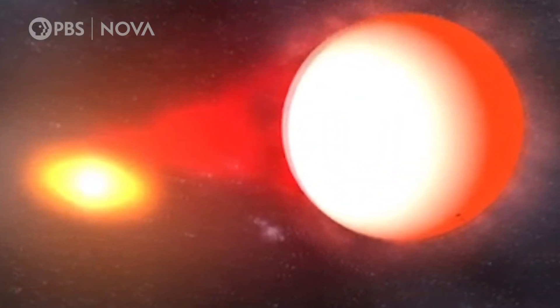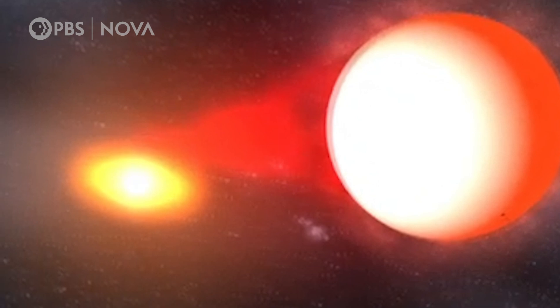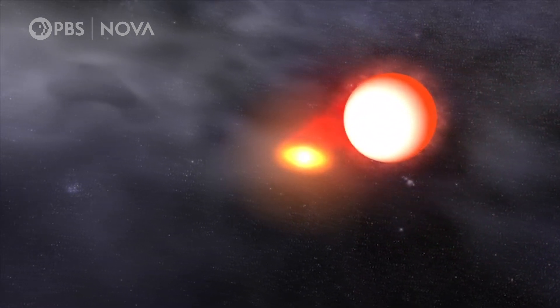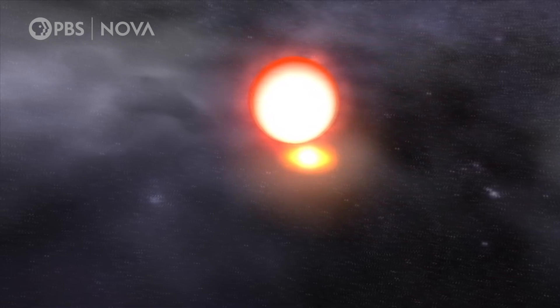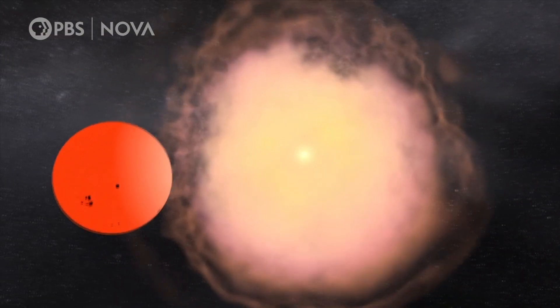As the red giant expands and cools, gas from its outer layers is pulled onto the nearby white dwarf. As this gas piles up on the small dense star, its interior gets hotter and hotter, until it triggers a massive explosion, a nova, and that's what we'll see in the night sky.